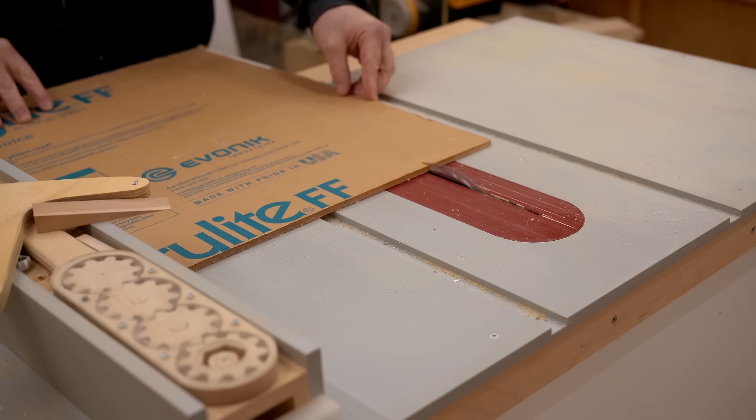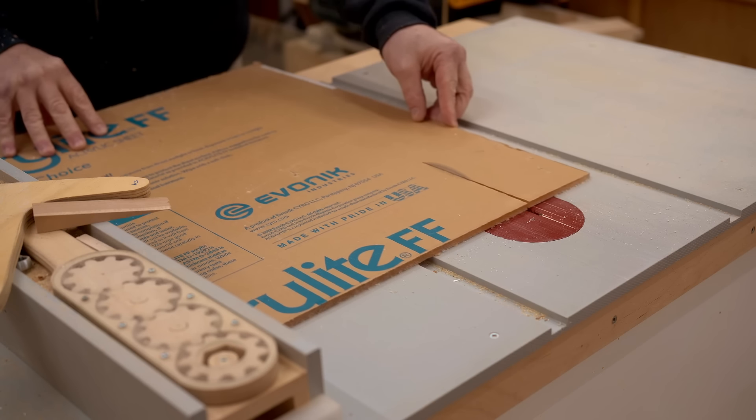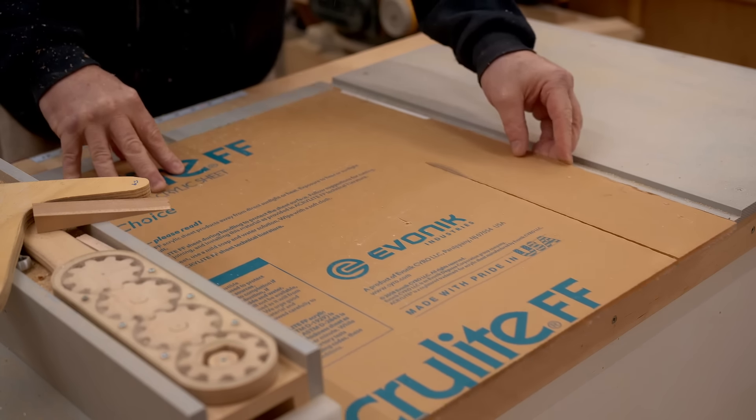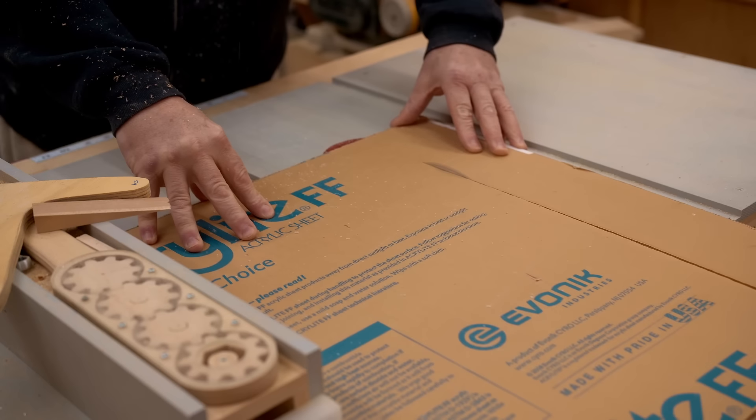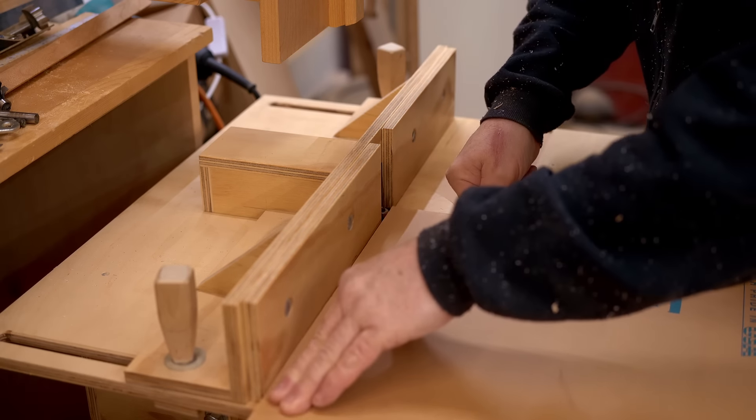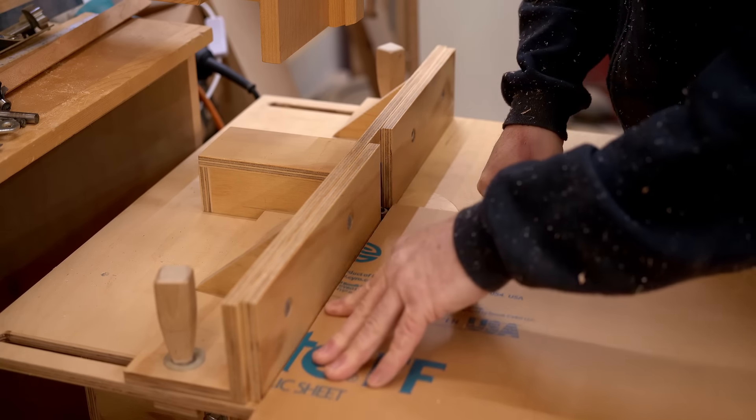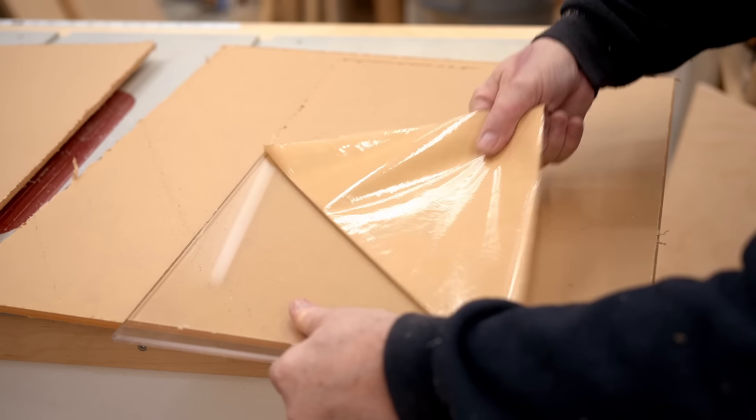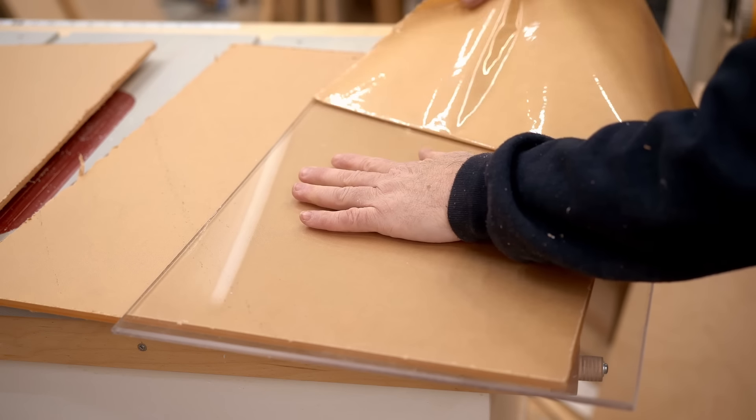And then while that was drying, I went out to the shop, and I cut the pieces of plexiglass that will make up the side panels and the top panel. And this has been kicking around my shop for the past 10 years, and here's a very satisfying peel.